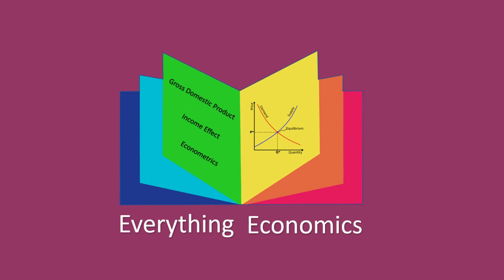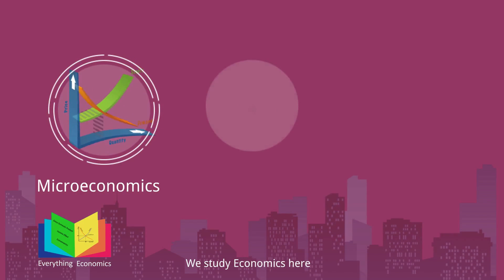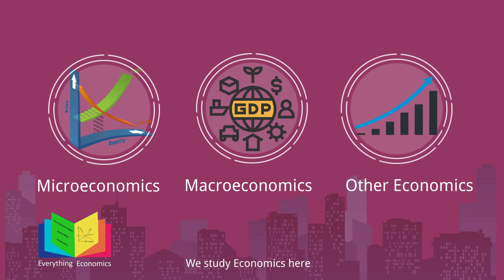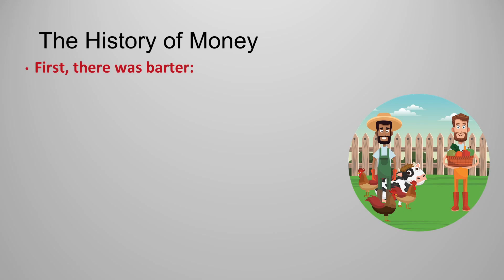Welcome to Everything Economics, where we study microeconomics, macroeconomics, and every other type of economics. This is part two of the chapter on the monetary system. In the first part we discussed the characteristics or functions of money, and in this one we will discuss the history of money. Now that you know what money is, you should be able to understand its history as well.